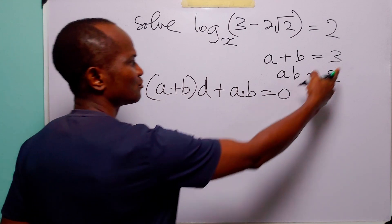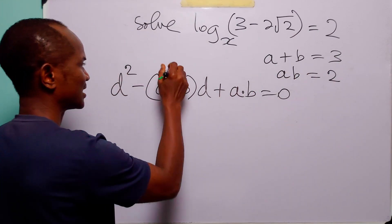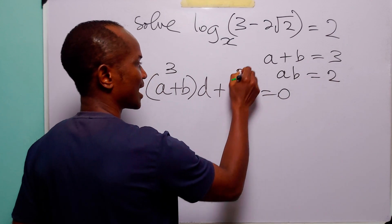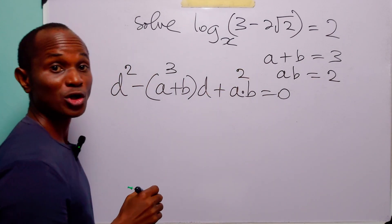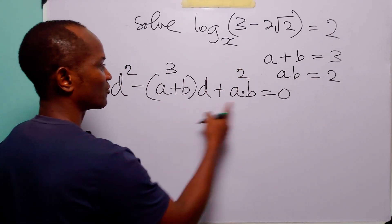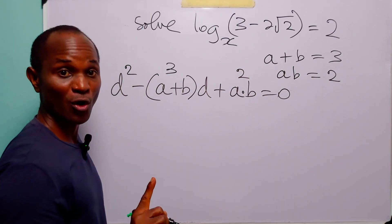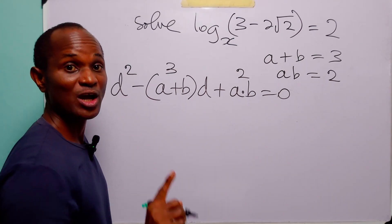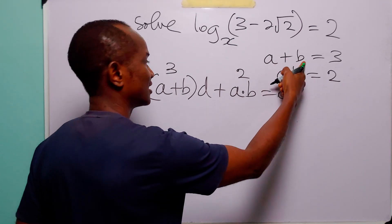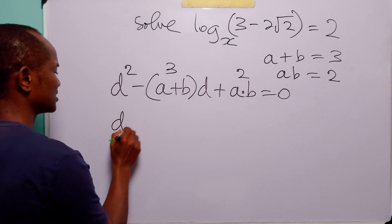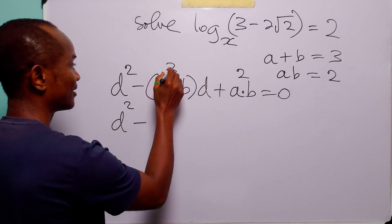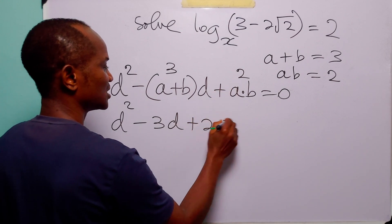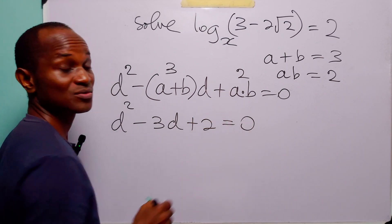So to find a and b, all we have to do is solve this quadratic equation — its roots will be a and b. We plug 3 where we have the sum of the roots and 2 where we have the product of the roots. The quadratic equation we need to solve is d squared minus 3d plus 2 equals 0.